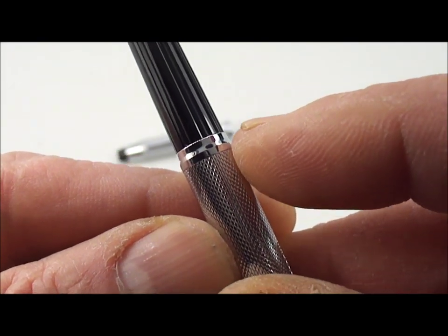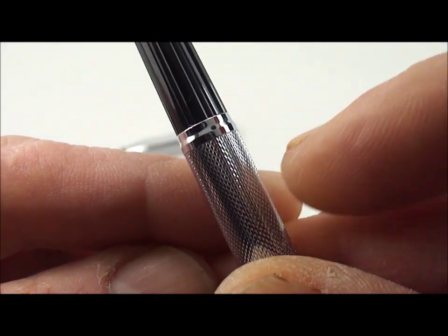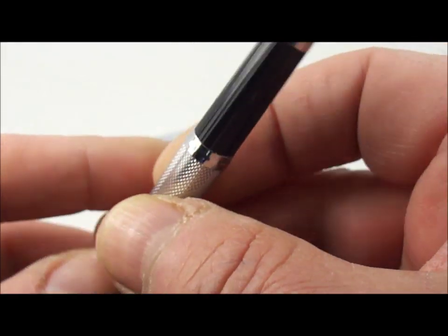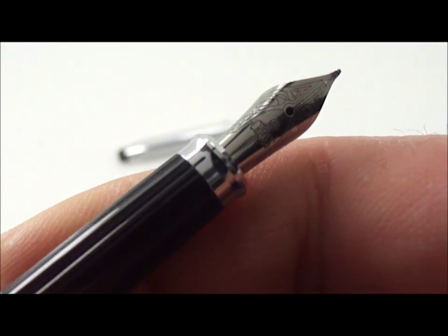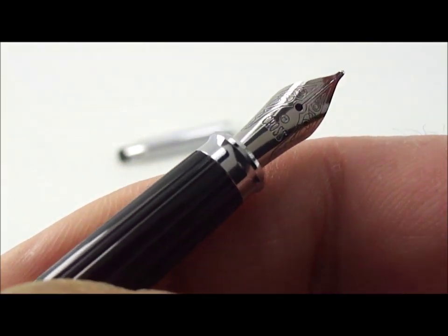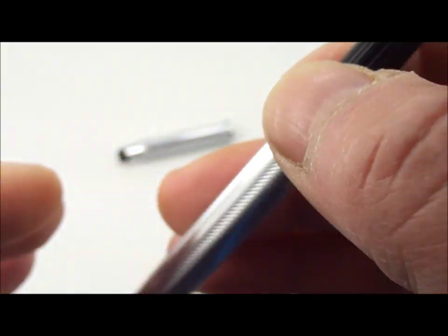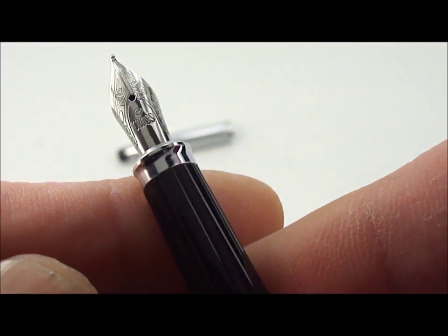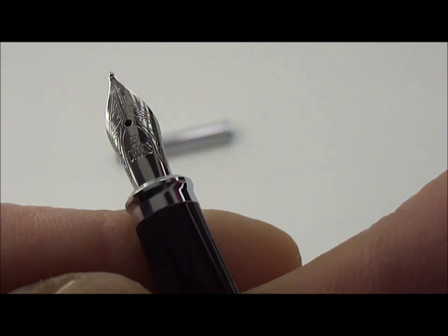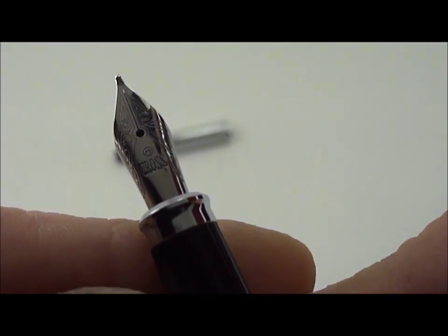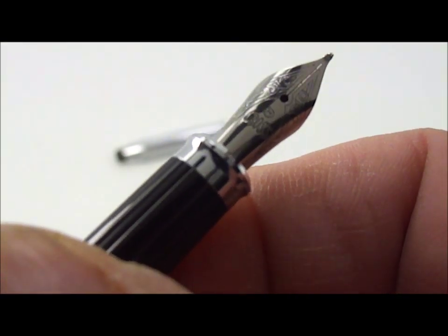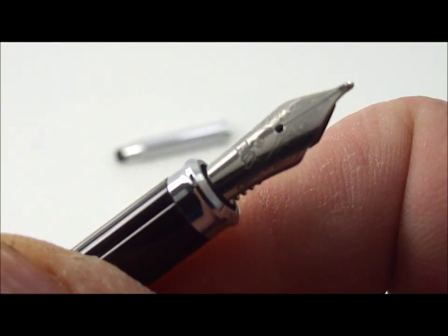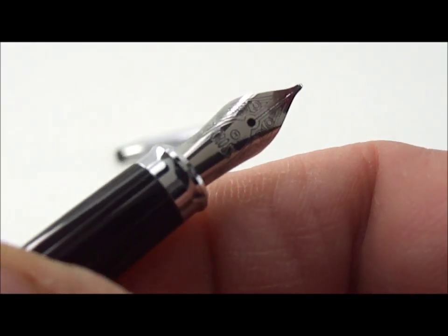The nib is, I believe it may be chrome or some kind of silver metal, and what it simply says is Cross on it. Let's try and get you a close-up of that. Hopefully you can see that. There we have the nib, absolutely beautiful nib actually.